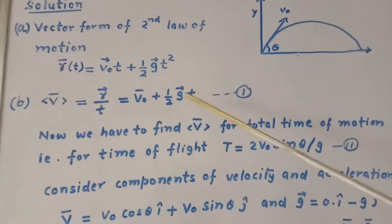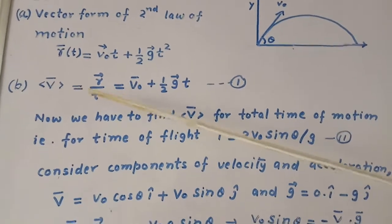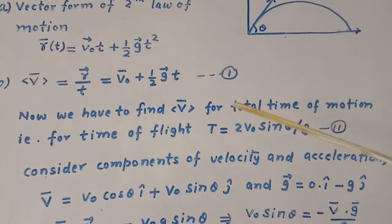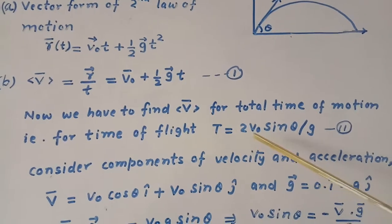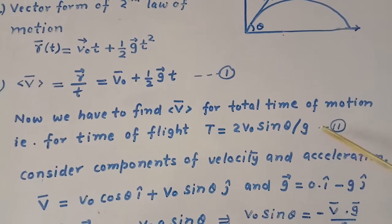Now we have to find average velocity for total time, that is, for time of flight. Time of flight is given by T equals 2 V0 sin theta divided by G.